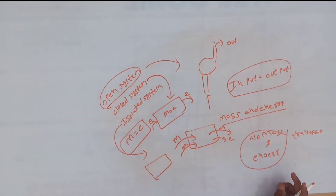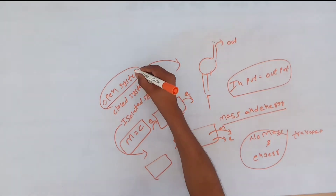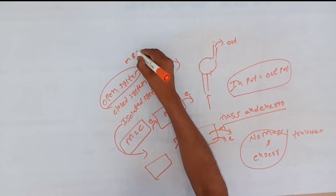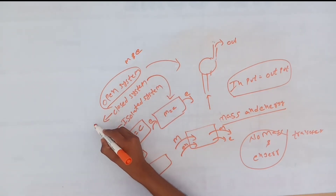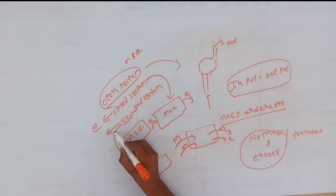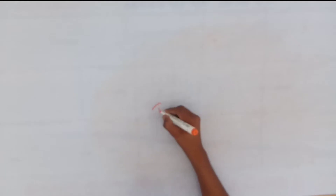So, friends, three systems: open system, closed system, and isolated system. Open system — mass and energy both transfer. Closed system — only energy transfers. Isolated system — neither mass nor energy transfers.